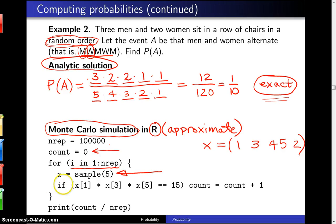And then we ask the question, is x[1], which is the integer that's there, times x[3] times x[5], is that equal to 15? And in this case, it's not. It's equal to 8. But if it ever is equal to 15, that means you have 1, 3, and 5 in any order in those three chairs.